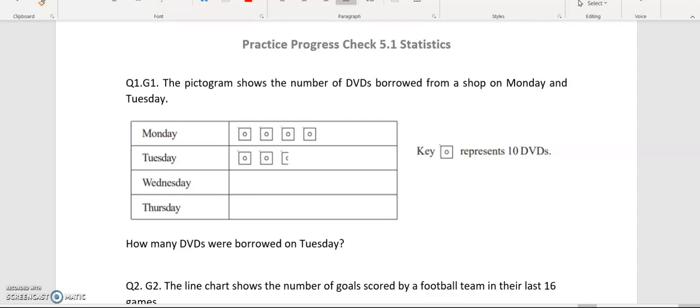Progress check 5.1 for GCSE Maths Statistics. Question number 1. The pictogram shows the number of DVDs borrowed from a shop on Monday and Tuesday. How many DVDs were borrowed on Tuesday? So we're looking at Tuesday. We have the key here which shows that this shape represents 10 DVDs. So this is going to be 10, 20, this is half so it's going to be 5. So 25 in total.